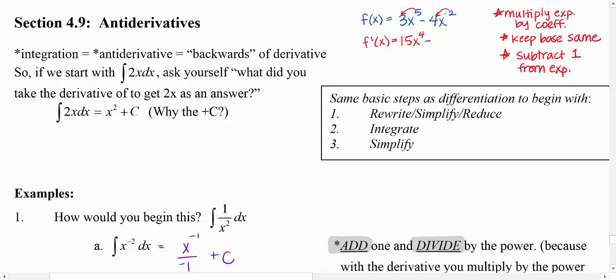And then I'll do it again for the next term. So that'll be minus, bring down the 2, and multiply the exponent by that coefficient. So that turns into an 8. Keep the base the same. Subtract 1 from my exponent.